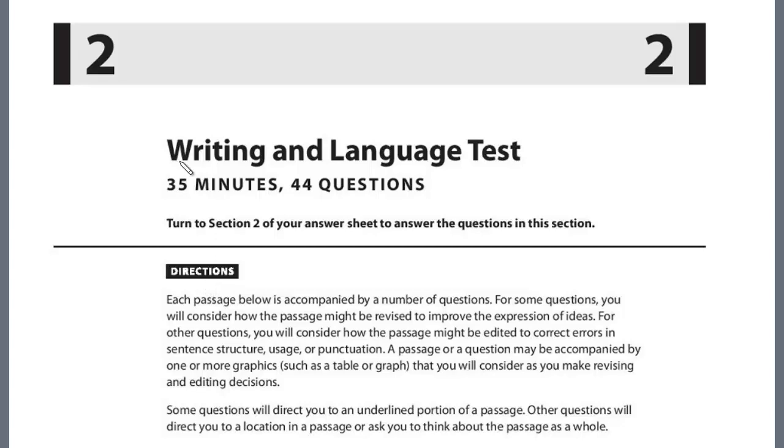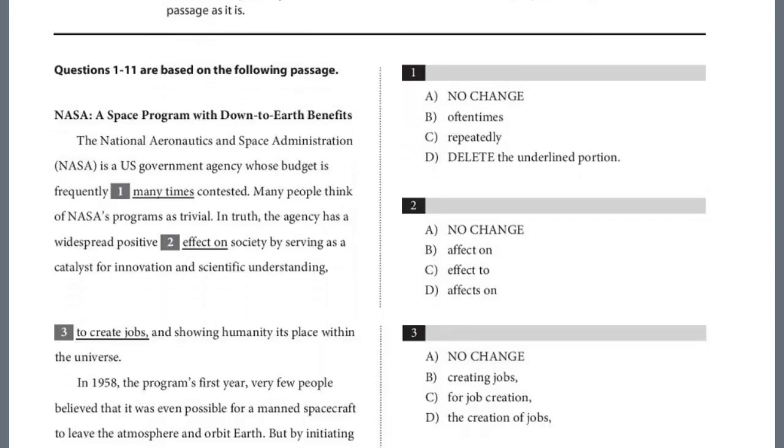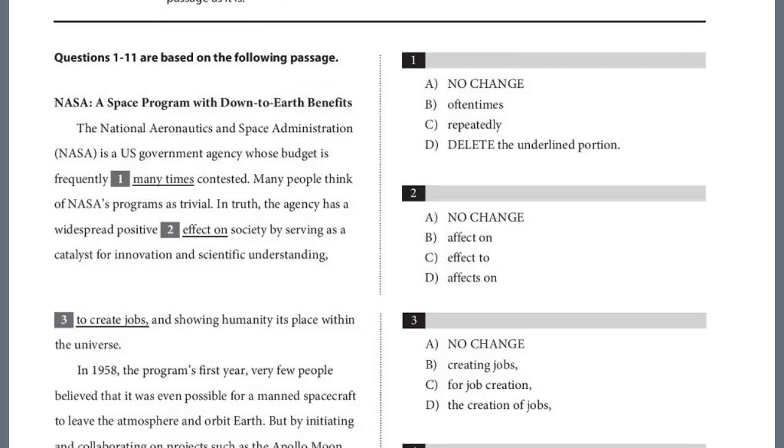In this lesson, we'll begin a review of Writing Test 7, Section 2, and let's take a look at the first passage. Remember, there are four passages on the writing section, SAT and PSAT, 11 questions each. NASA, a space program with down-to-earth benefits.